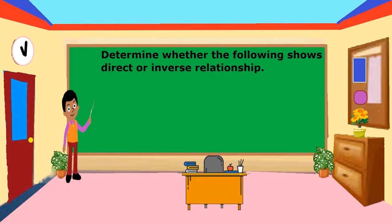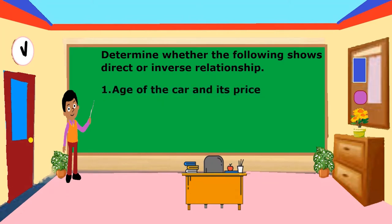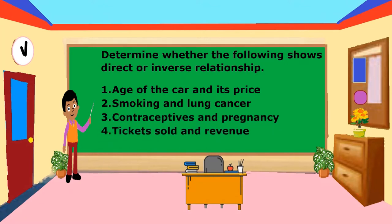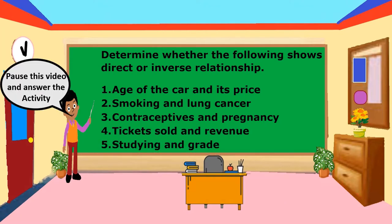Determine whether the following shows a direct or inverse relationship. 1. Age of the car and its price. 2. Smoking and lung cancer. 3. Contraceptives and pregnancy. 4. Tickets sold and revenue. 5. Studying and grade. Pause this video and answer the activity.